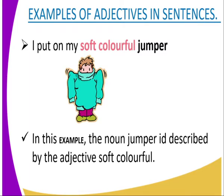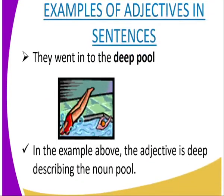'Soft' and 'colorful' are adjectives that tell us more about the noun 'jumper.' We also have the example: 'They went into the deep pool.' Here, 'deep' describes the noun 'pool,' as you can see from the image.